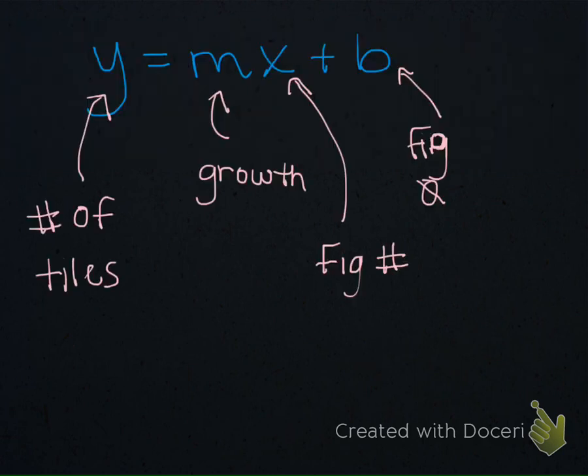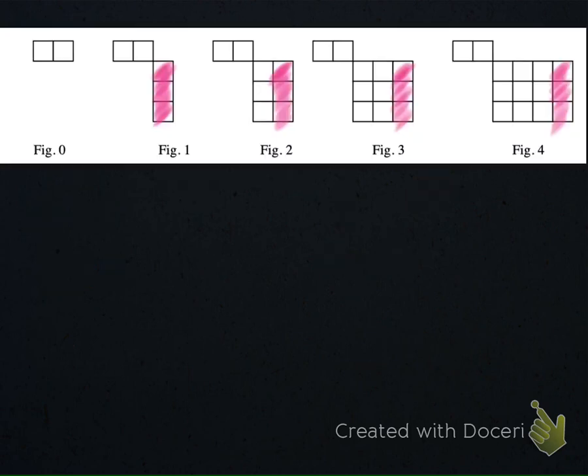If you remember back to y equals mx plus b, the things we need to be able to identify to write the rule for any pattern is going to be the growth and how many tiles are in figure 0. Looking at this example, we know that figure 0 has two tiles. So that tells me that b is going to be equal to 2.